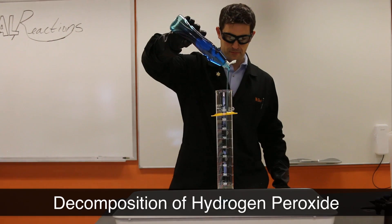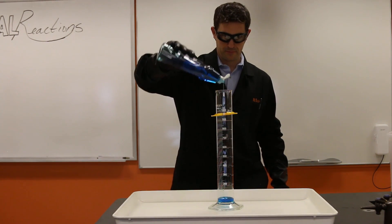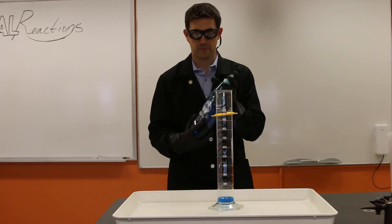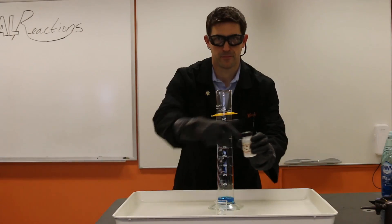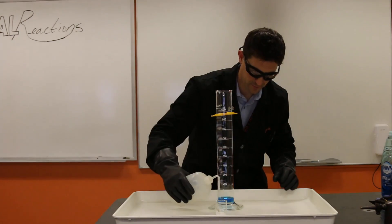So this is called elephant toothpaste. It shows the decomposition of hydrogen peroxide. And I like to do this with about 25 milliliters of Dawn dish soap. Fill that in the bottom. I've pre-measured out 10 grams of potassium iodide, which you saw as the catalyst.